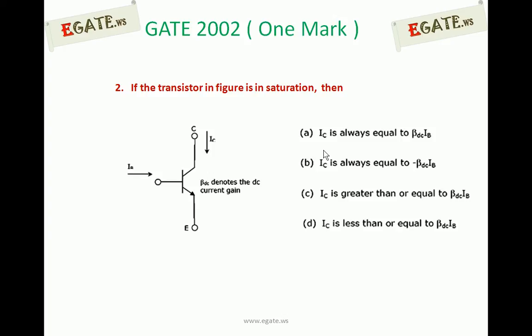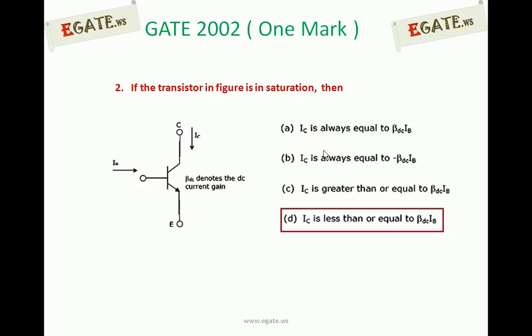If the transistor is in saturation, out of these four statements, which one is correct? The right option is D. IC is always less than or equal to beta DC times IB.